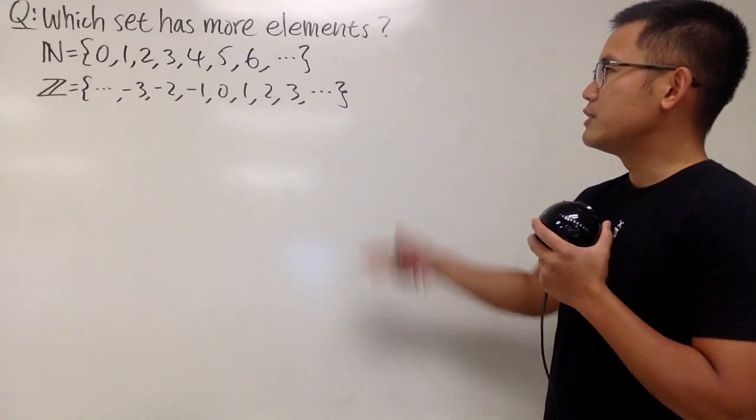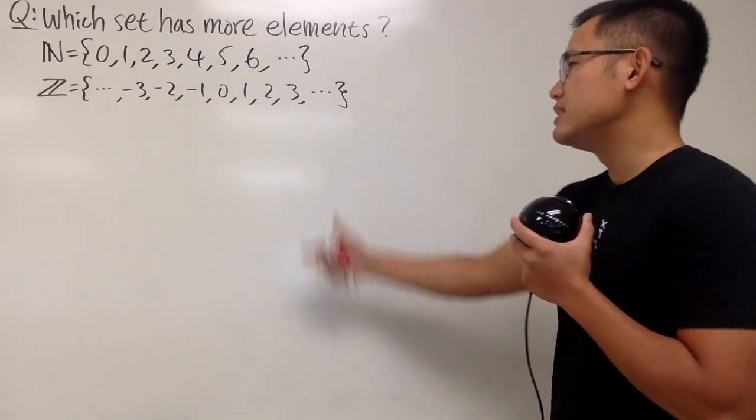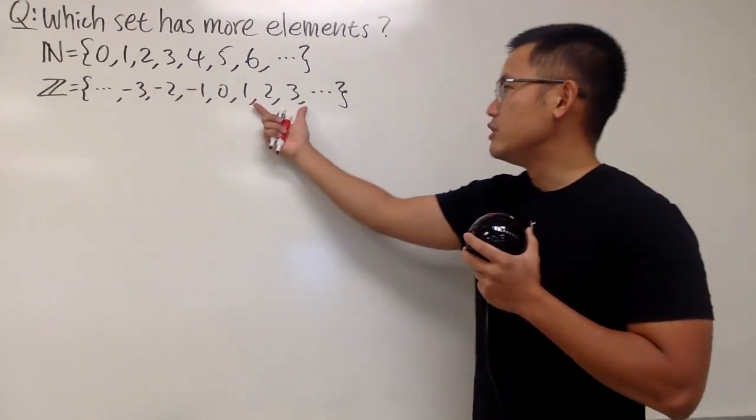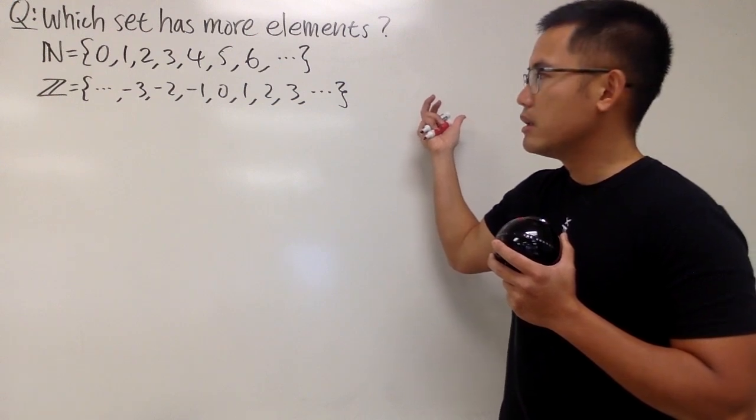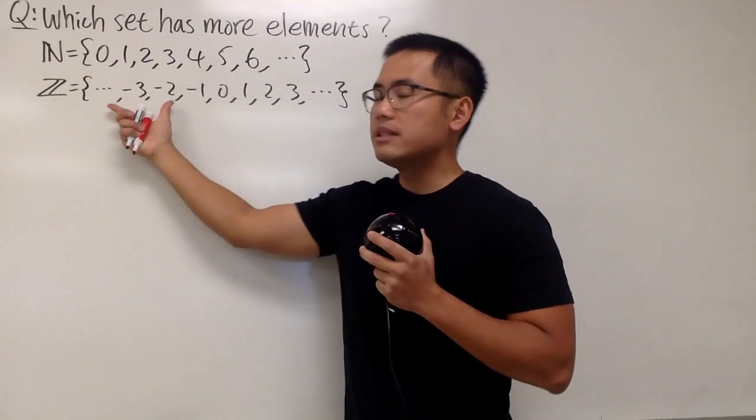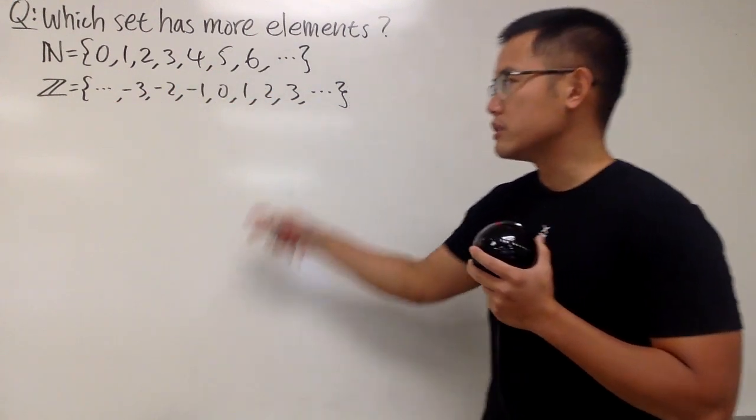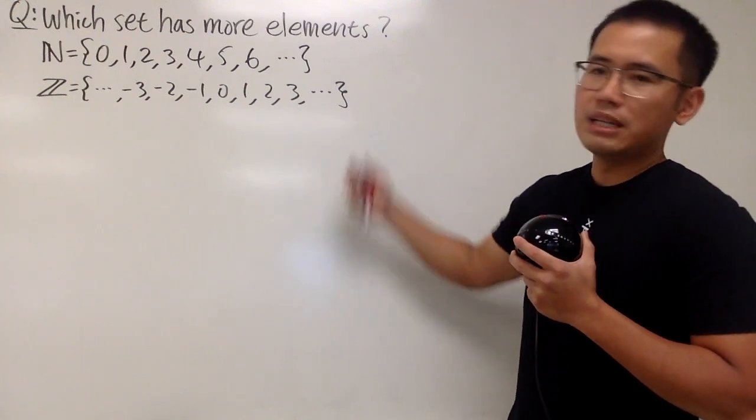Hmm, wouldn't this just be obvious that because Z contains 0, 1, 2, 3, 4, 5, and so on right here already, and N does not have these numbers, so of course Z has more elements, isn't it?